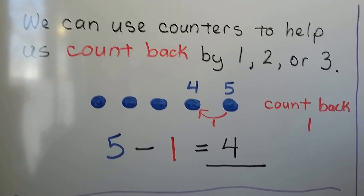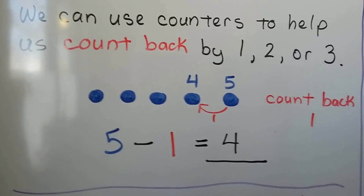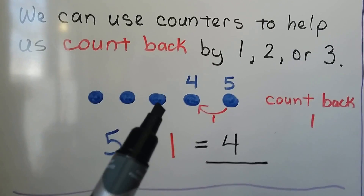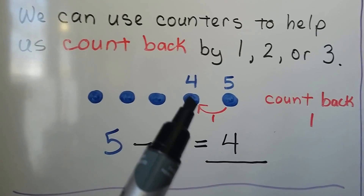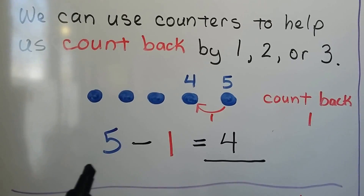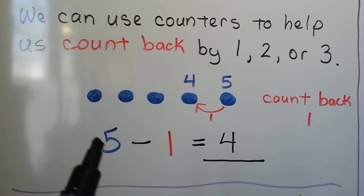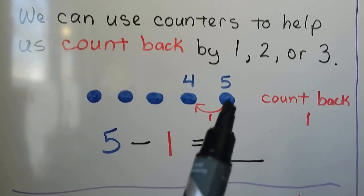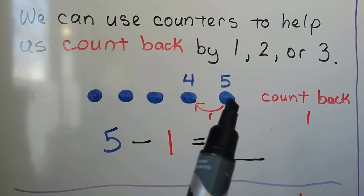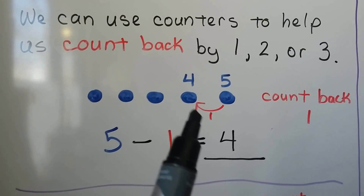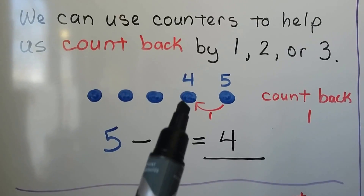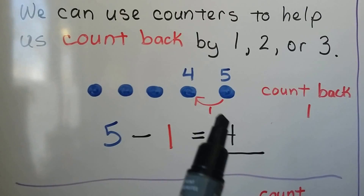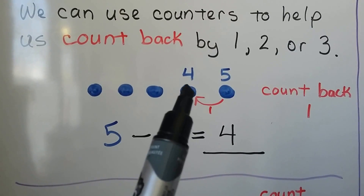Here we have five blue counters: 1, 2, 3, 4, 5. We have 5 minus 1. We start with counter number 5, and we go back 1, and that takes us to 4. 5 minus 1 is equal to 4. We count back 1.